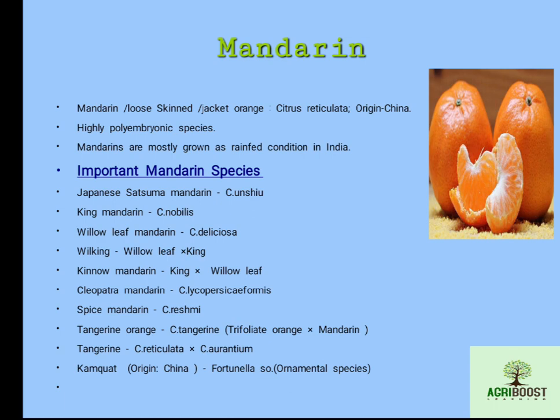Wilking is a cross between willow leaf and King mandarin. Kino mandarin is a cross between King and willow leaf — these two are opposite crosses. The scientific name of Cleopatra mandarin is Citrus reshni formis. The scientific name of spice mandarin is Citrus reshni. Tangerine orange, scientific name Citrus tangerina, is a cross between trifoliate orange and mandarin, also described as a cross between Citrus reticulata and Citrus aurantium.